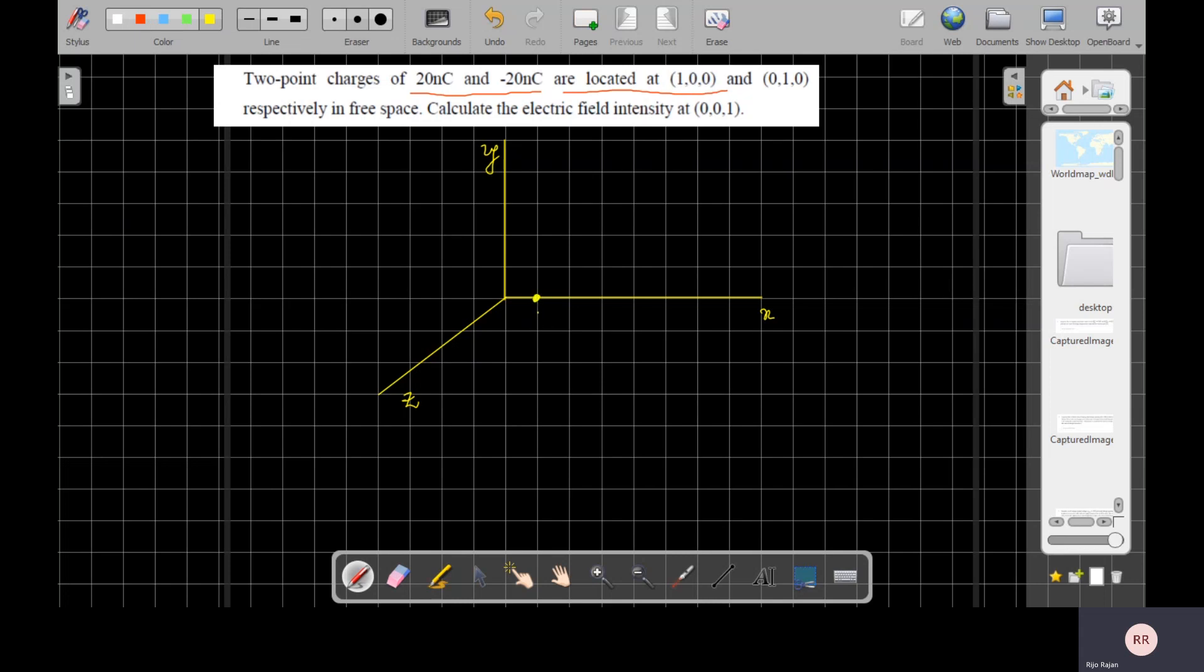Because X is 1 here and Y is here, and this is your Q1. Another charge is located at (0,1,0), that means another charge is located at this point Q2. The coordinate of this point is (0,1,0).